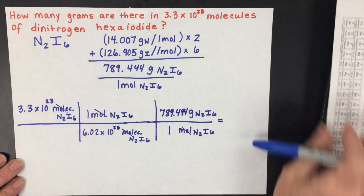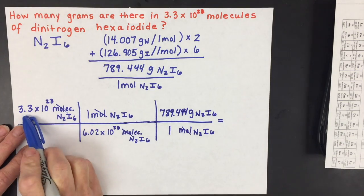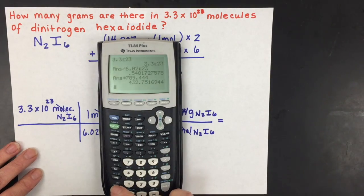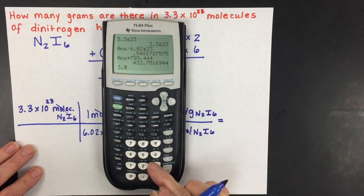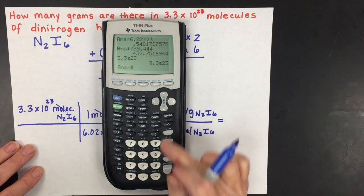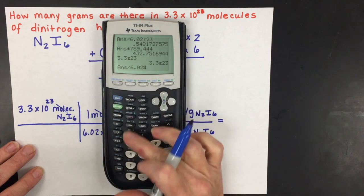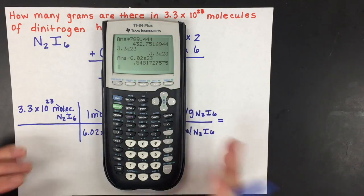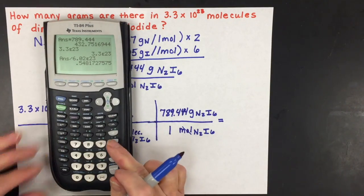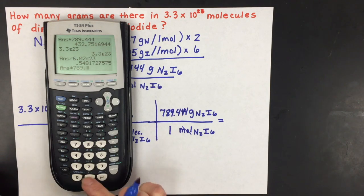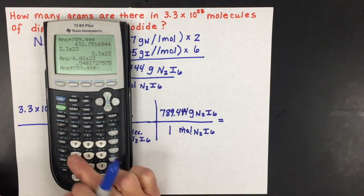So our answer with the correct number of significant figures—because we're only going to be able to have two significant figures—we'll find that by taking 3.3 to the 23rd. We'll divide that by Avogadro's number, which is approximately about a half a mole, a little bit more. And then we're going to multiply that by the molar mass for this covalent compound, which is 789.444.